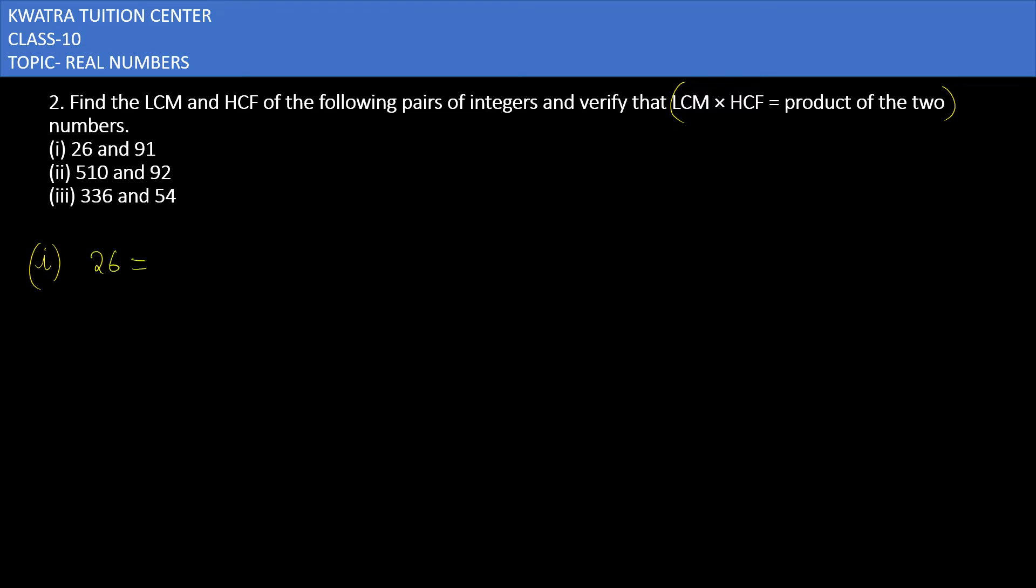So first we will find the value of 26 in terms of prime numbers. 26 can be written as 2 × 13. 91 can be written as 7 × 13.